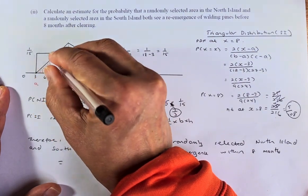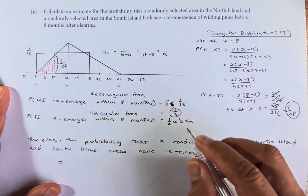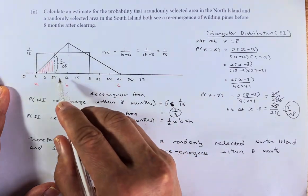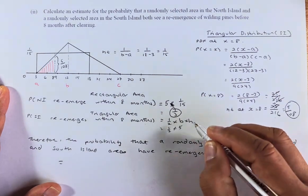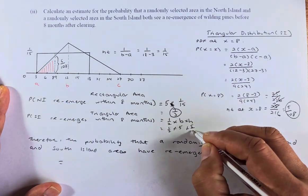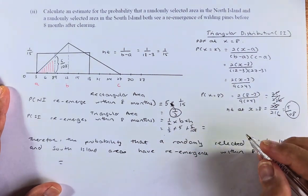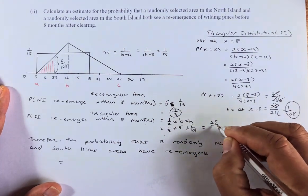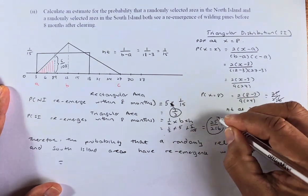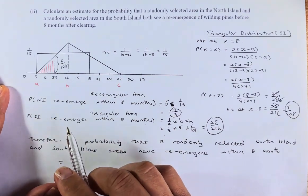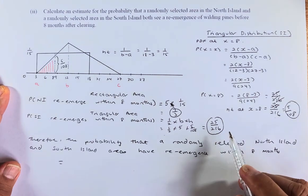To calculate the area of this region — within 8 months — it's going to be half times base times height. The base is 8 minus 3, so half times 5, and the height is 5 over 108. Putting that in the calculator, the answer is 25 over 216. So the probability of the South Island pine tree re-emerging within 8 months is 25 over 216.